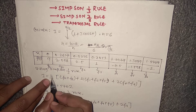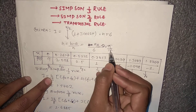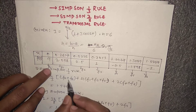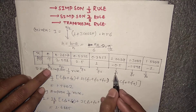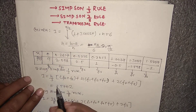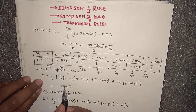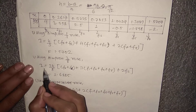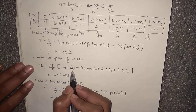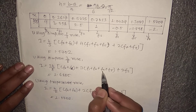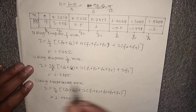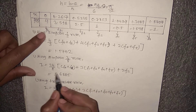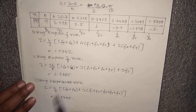Substituting h = π/12 and the values f0 through f6 from our data into Simpson's 1/3 rule, we get I = 1.5702. Then using Simpson's 3/8 rule, I equals 3h/8 times (f0 + f6 + 3(f1 + f2 + f4 + f5) + 2·f3). Substituting the data values, we get I = 1.6885.